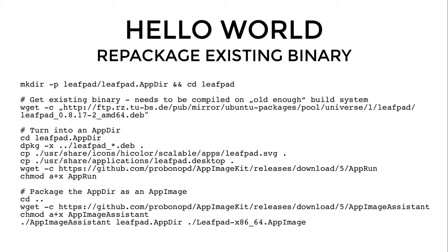Finally, I get out of the AppDir, download AppImage Assistant, and use AppImage Assistant to convert the AppDir into an AppImage. It's really that simple. The result is an AppImage that runs on the distribution this binary was compiled from and on newer distributions.